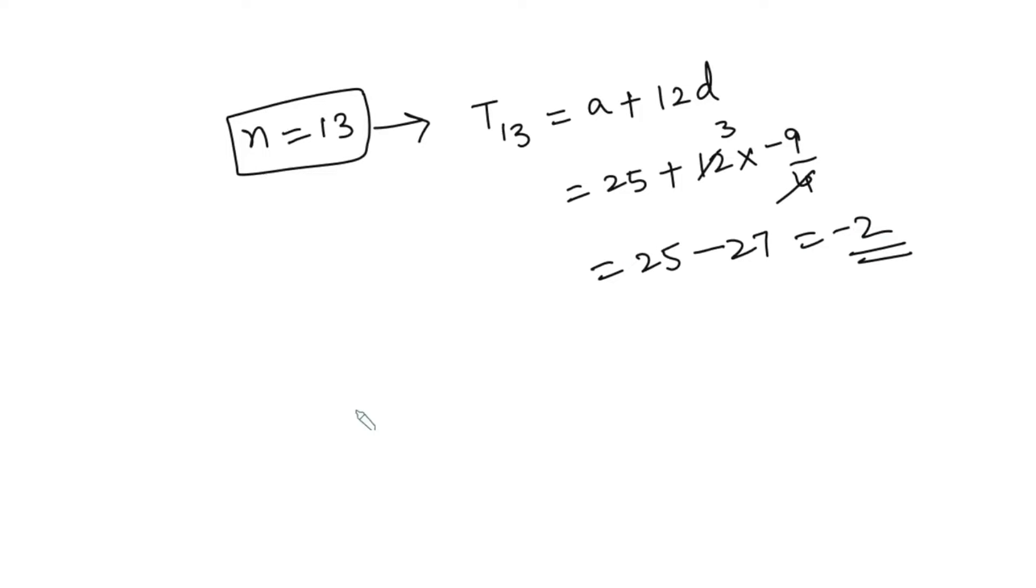So this is how we find the first negative term. But our motive is to find the numerically smallest term. In order to find the numerically smallest term, we will go one step back.